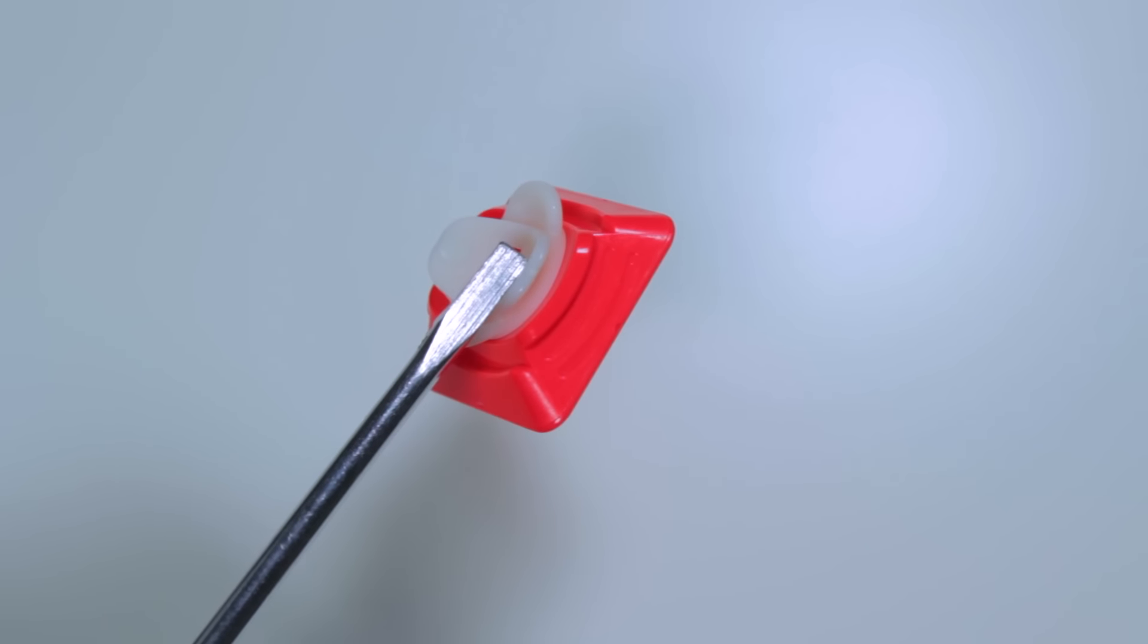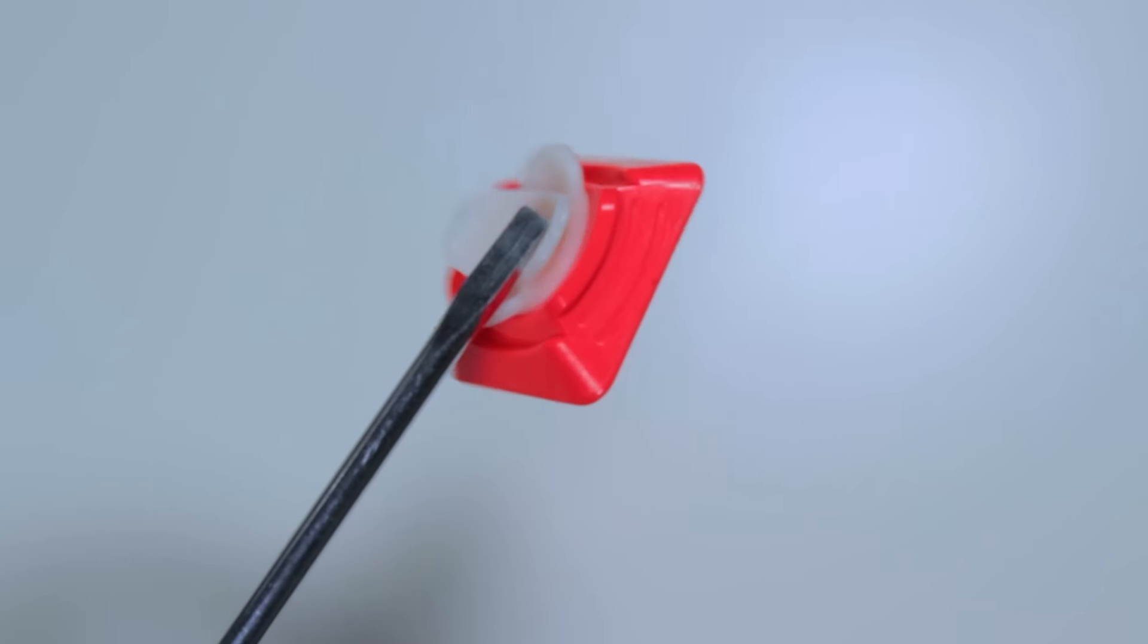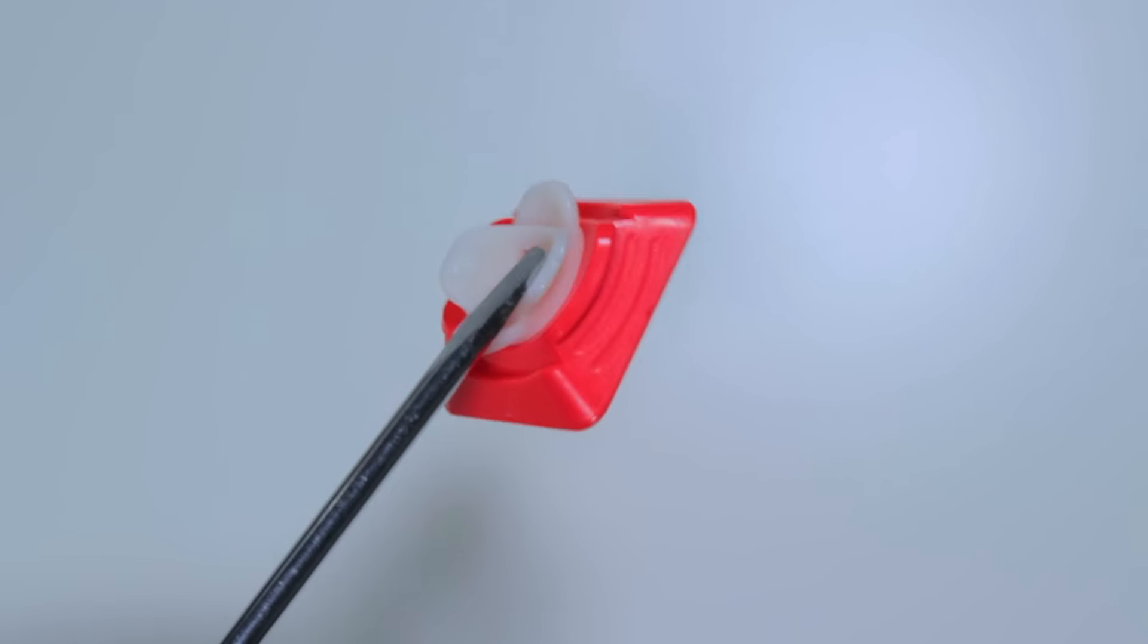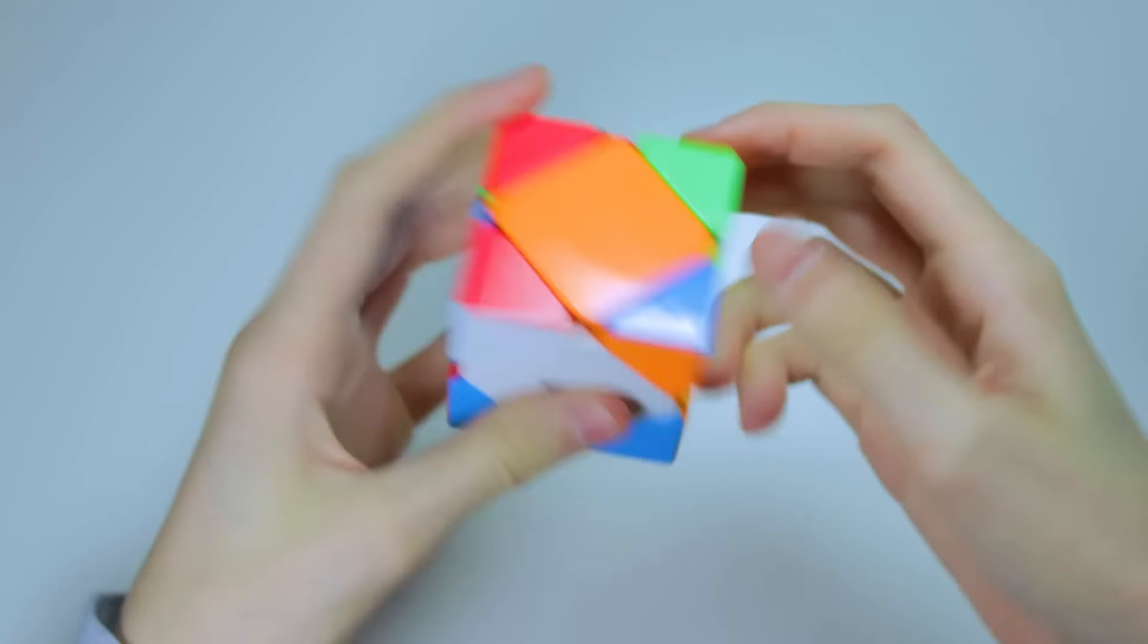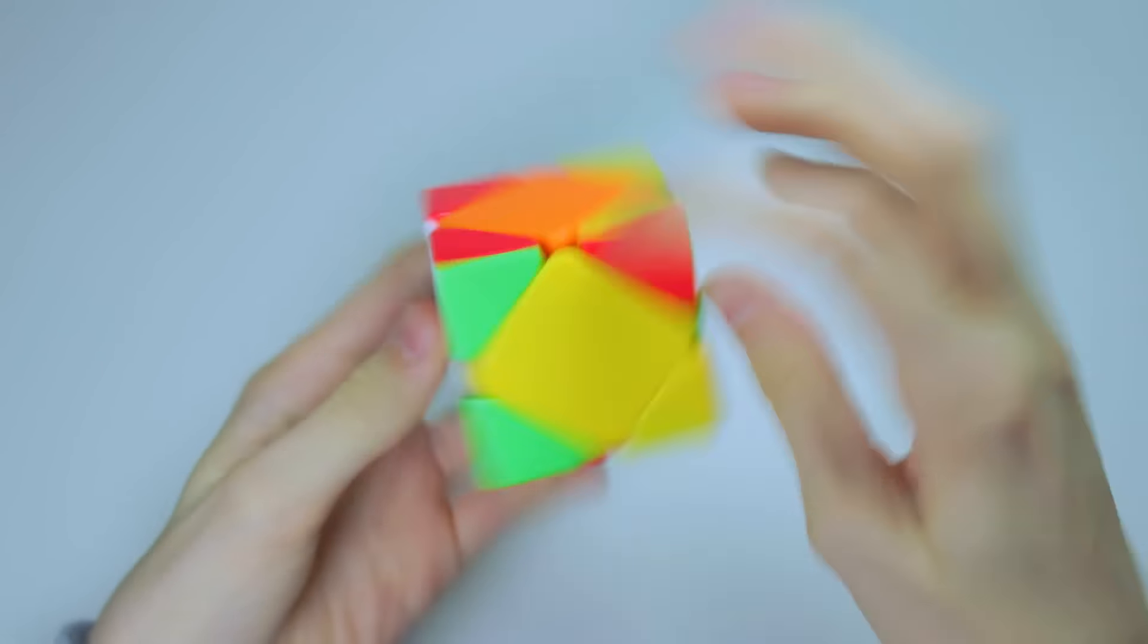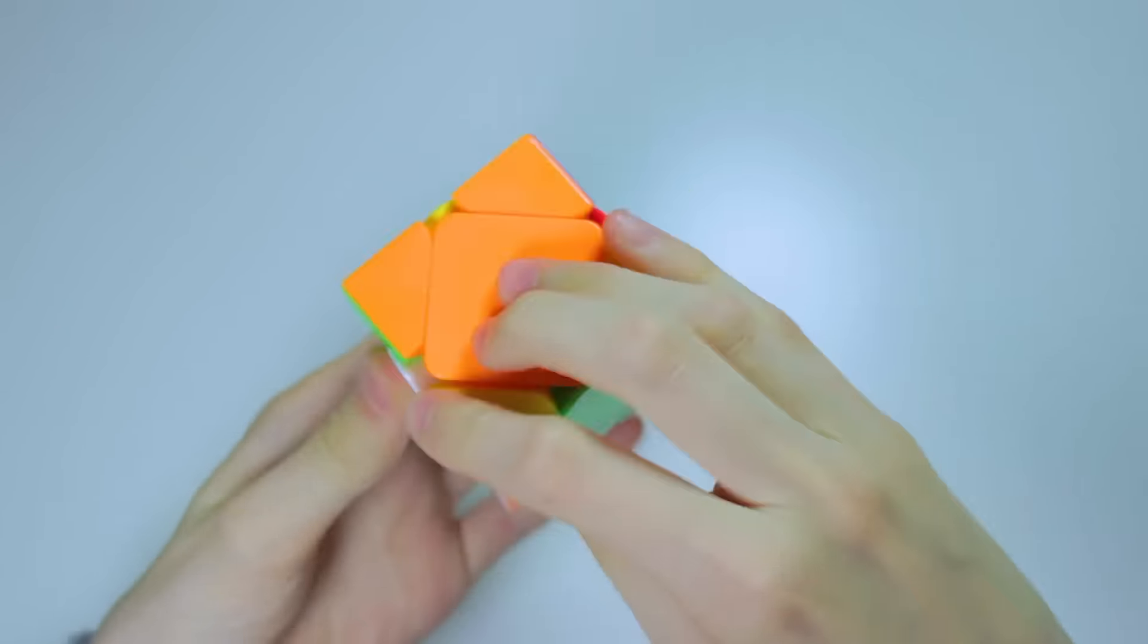This definitely makes the cube have a different feeling than the original Moyu, Chiyi, and Shang Shao scubes. Rather than having a harsh click at the end of each turn from the ball bearing falling into place, the cube instead just slows down towards the end of each turn.